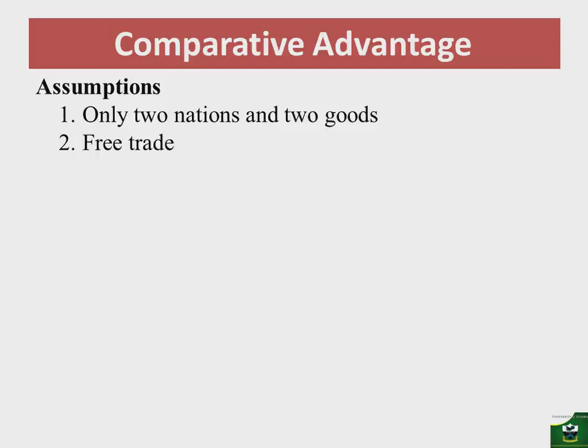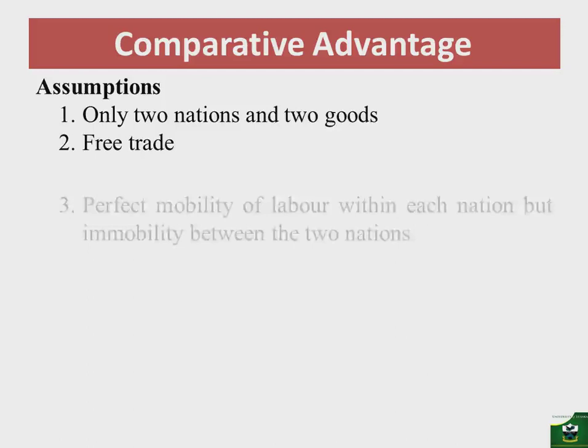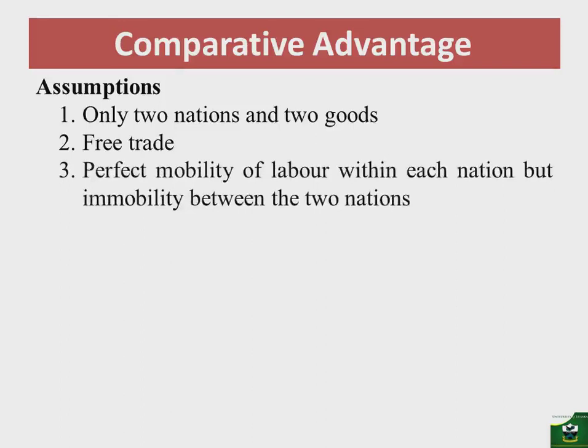We also assume perfect mobility of labor within each nation but immobility between the two nations. Labor can move freely within a given economy from one production site to the other, but labor cannot cross borders to go and produce commodities in the other country.